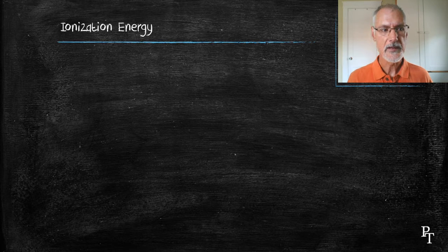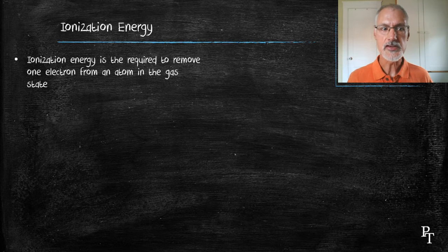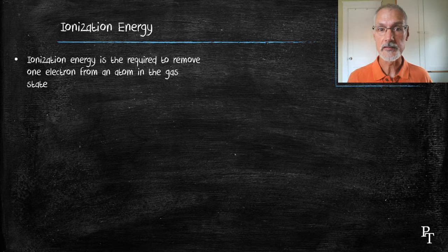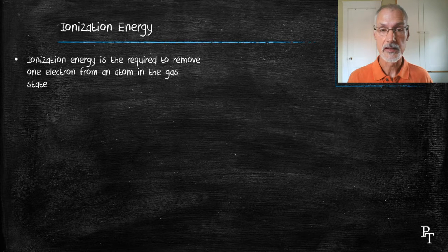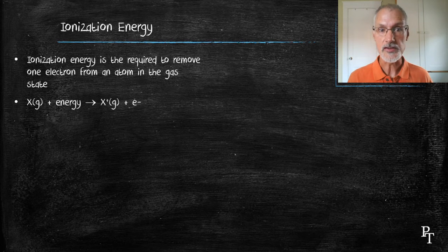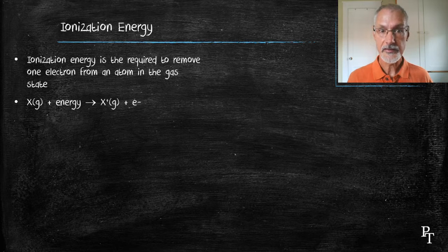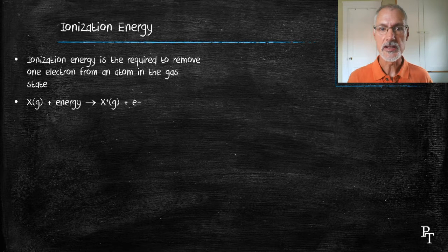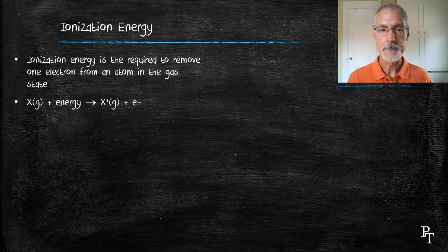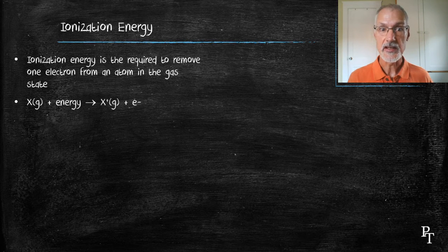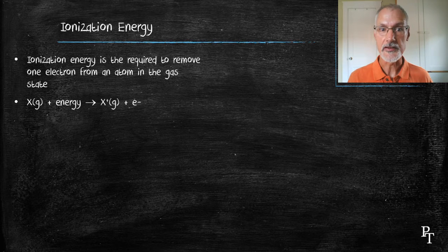First of all, its definition. Ionization energy is the energy required to remove one electron from an atom in the gaseous state. I can write this out as a chemical equation. Here, X, and notice that it's in gas form, requires energy to produce the X plus ion. It's important to emphasize here that things are in the gaseous state and that energy is a requirement. It's on the reactant side.